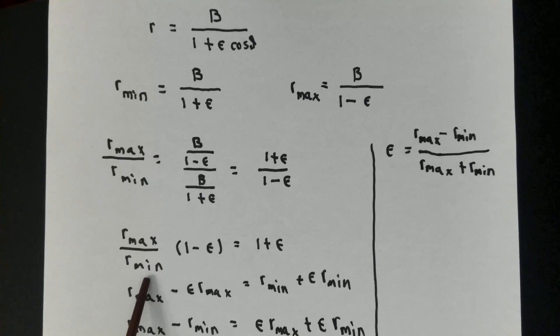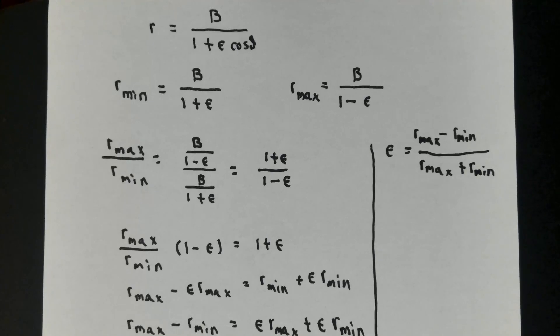Multiply both sides by 1 minus epsilon. Expand. Add epsilon r max to both sides. Subtract r min from both sides. Factor the epsilon out. Divide through by r max plus r min. And you obtain this result.